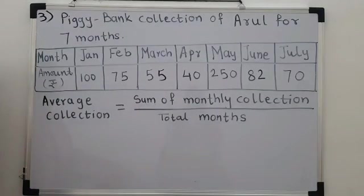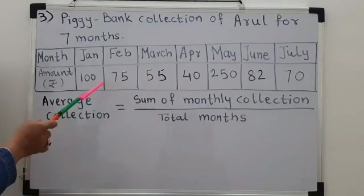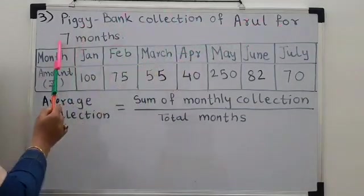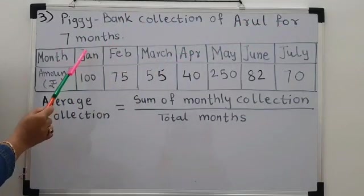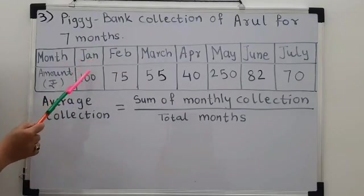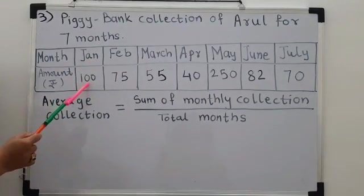Here is one more example to understand the concept of finding average. The data here shows piggy bank collection of Arun for 7 months. The data table, I will read data table for you. In the month of January, the piggy bank collection was Rs. 100.